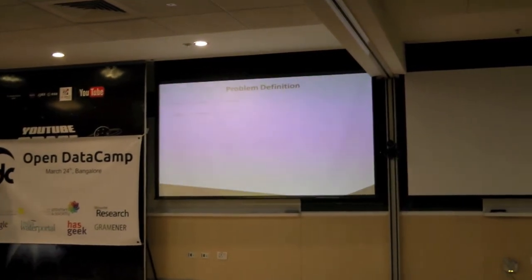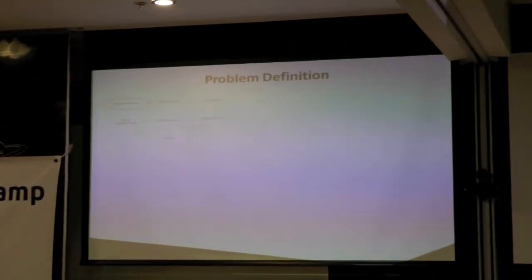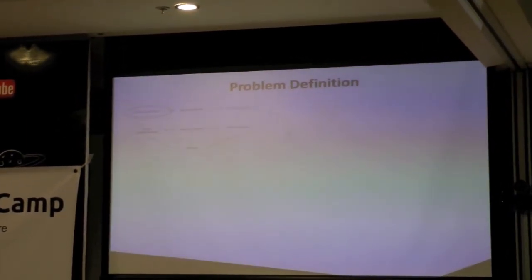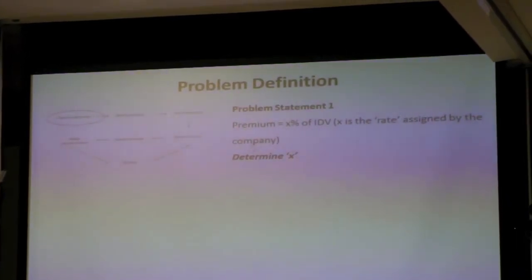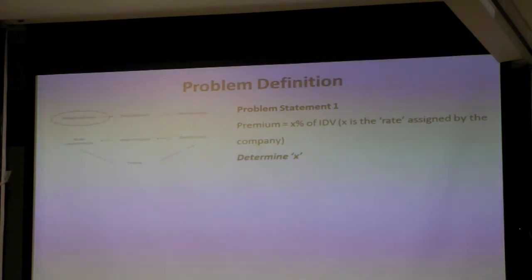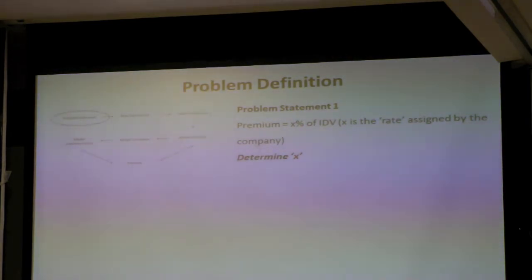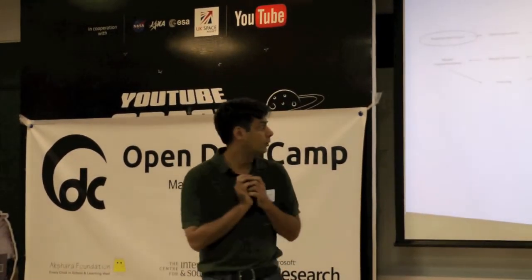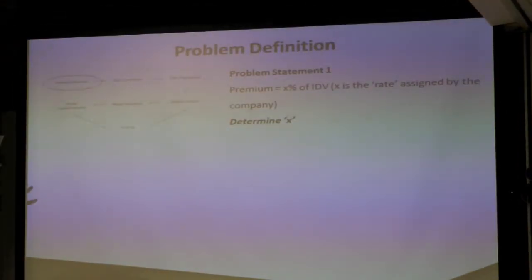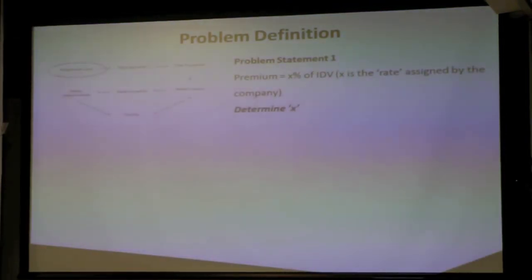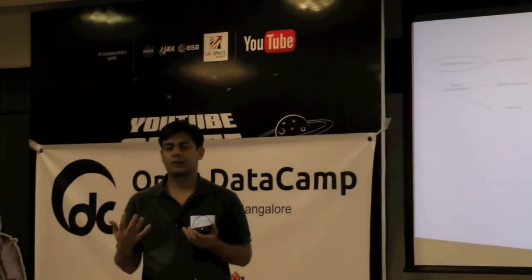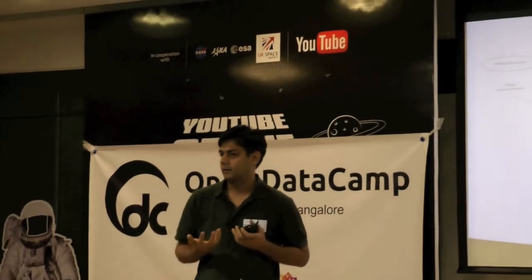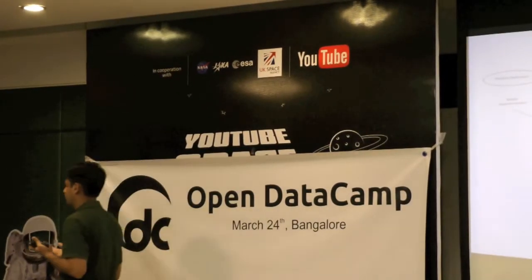The problem definition is usually the most interesting step. The business problem given to us was: premium is X percent of IDV — a fixed percentage of the declared value of the car. Regardless of where you live or what vehicle you're driving, a flat rate was charged for everyone. The company now wants to determine the optimal level of X and come up with different values for different models based on risk profile.